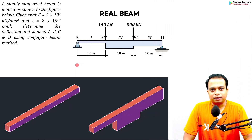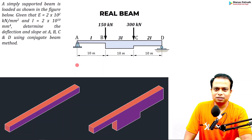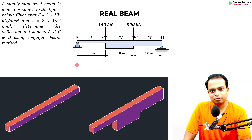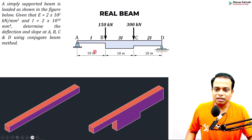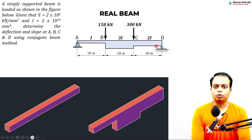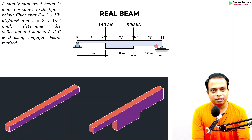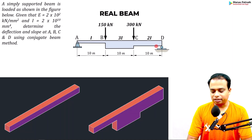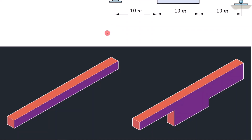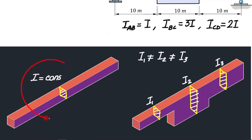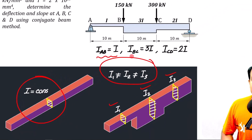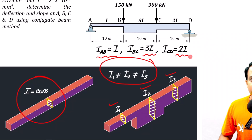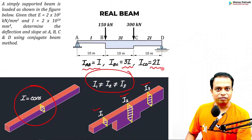If you have seen my previous video covering example number three, this should be relatively easier to understand. This is slightly more difficult as you have three sections to deal with, but we can easily apply the conjugate beam method to calculate slopes and deflections. Most problems so far involved beams of uniform cross sections, but here the cross sections at three locations are different — the area moment of inertias are I, 3I, and 2I respectively.